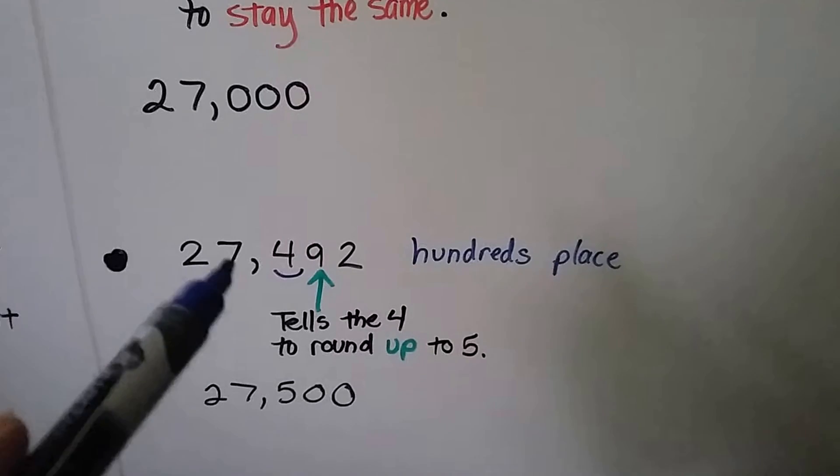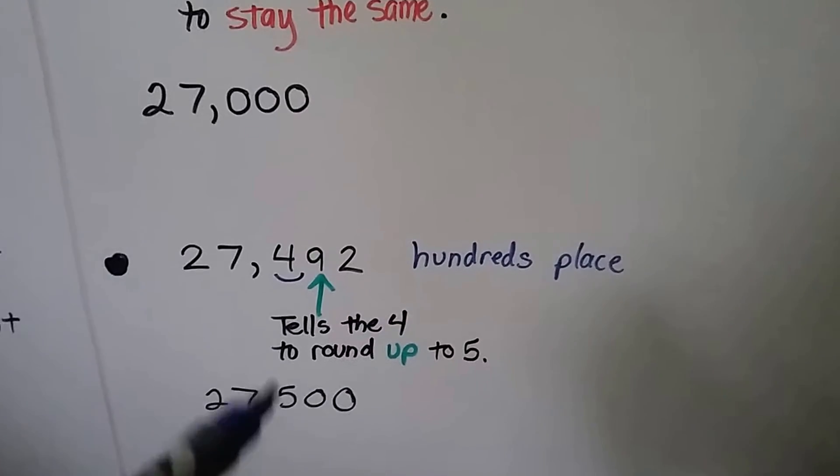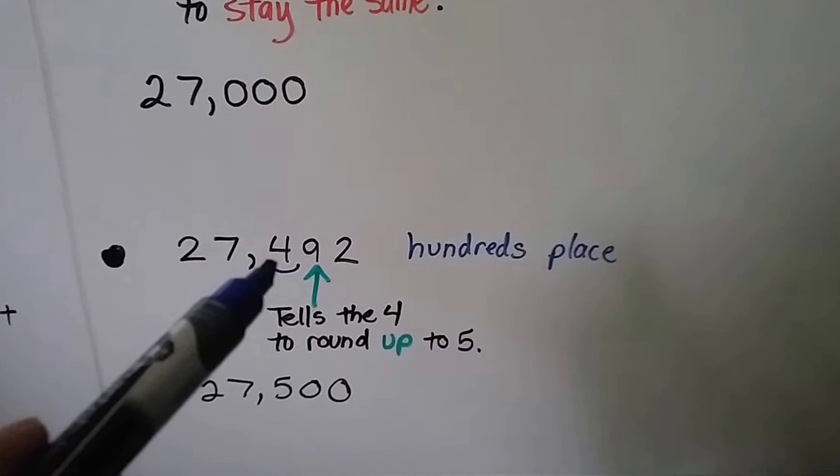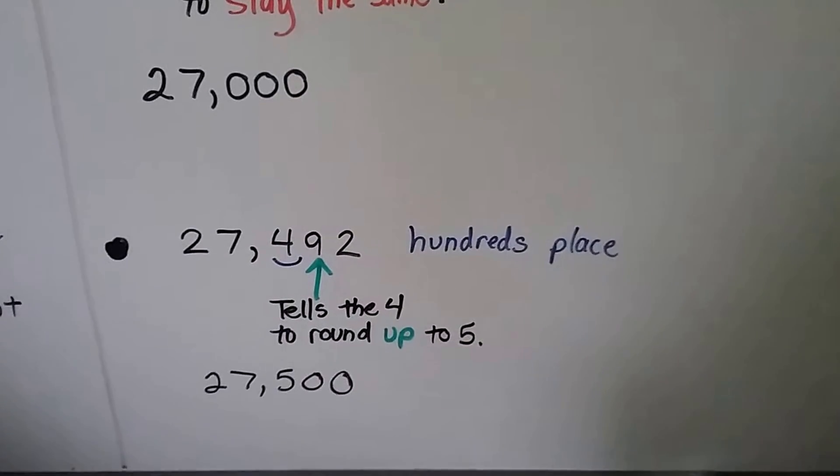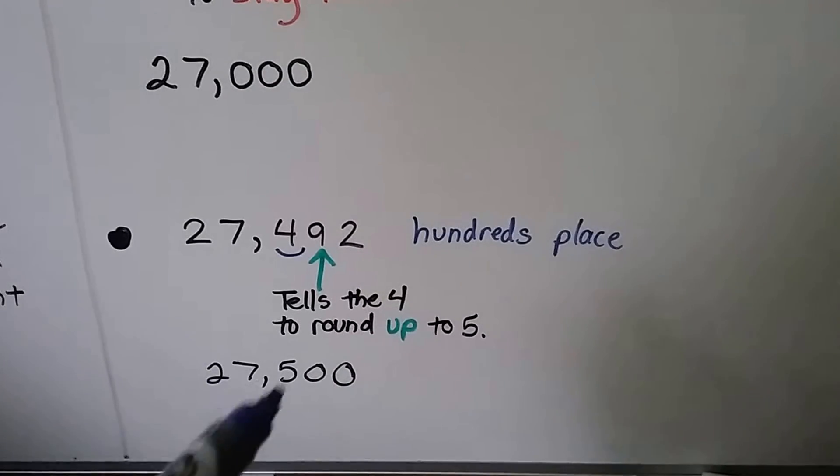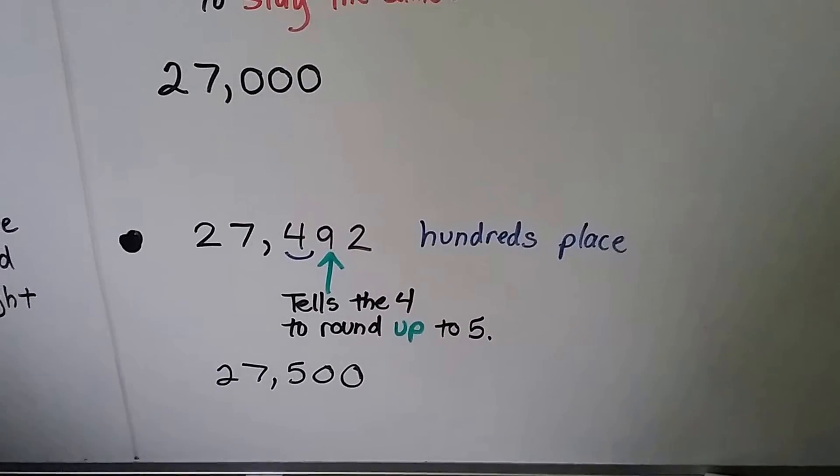Same exact number again, 27,492. Now the 4 is underlined. That's the hundreds place. This 9 tells the 4 to round up to a 5. So this is going to round to 27,500. Let's do a couple more.